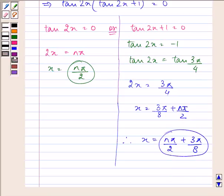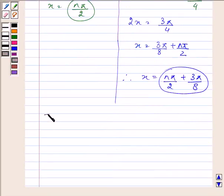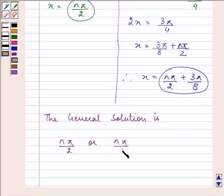These are the two alternatives, and hence, the general solution is nπ/2 or nπ/2 + 3π/8, where n belongs to the set of integers. This is our final answer.